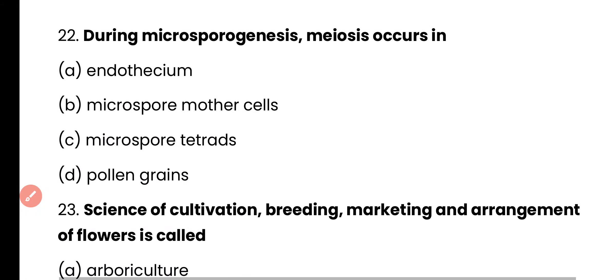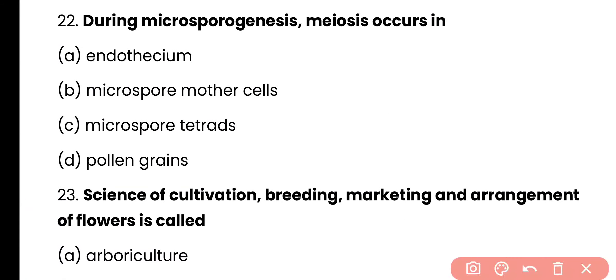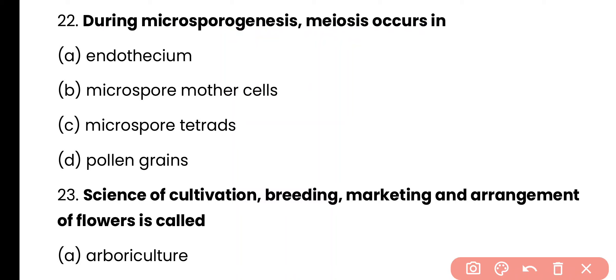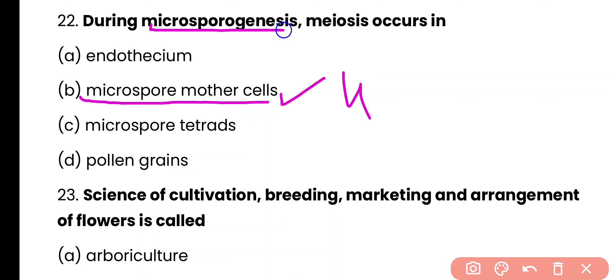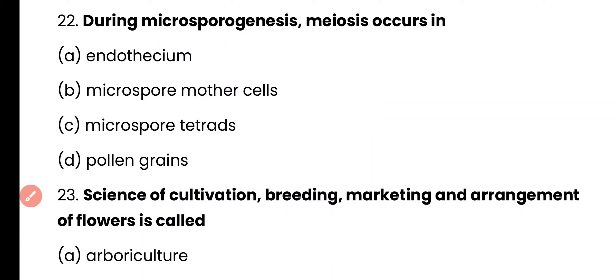Question 22. During microsporogenesis, meiosis occurs in: endothecium, microspore mother cells, microspore tetrads, or pollen grains? The correct answer is option B. Meiosis takes place in microspore mother cells, and four haploid microspores are produced during microsporogenesis.